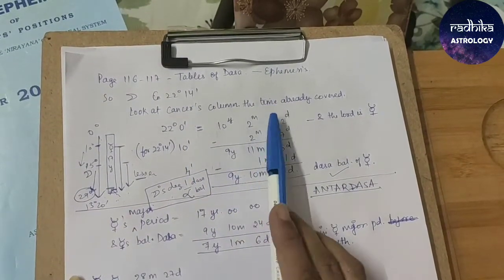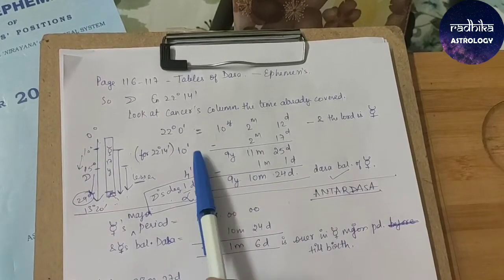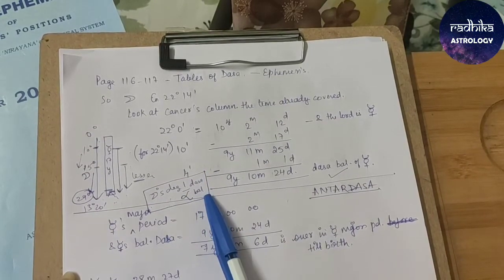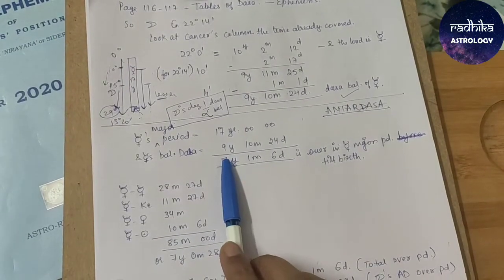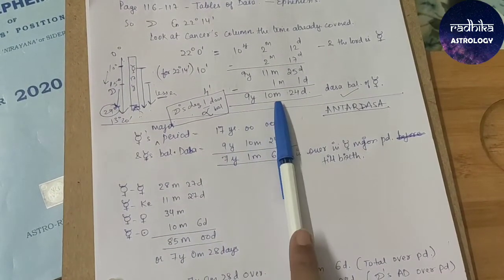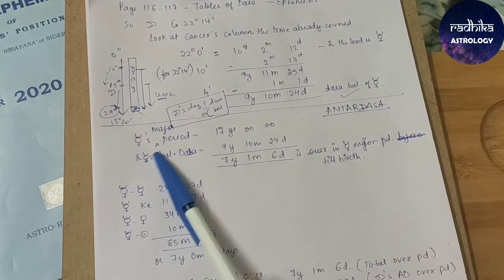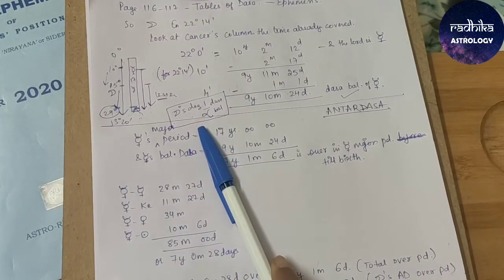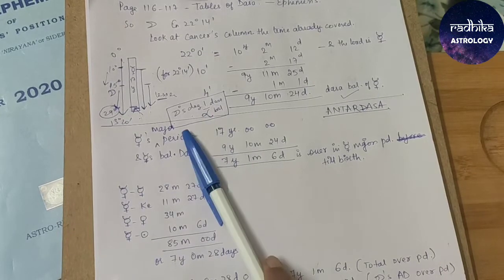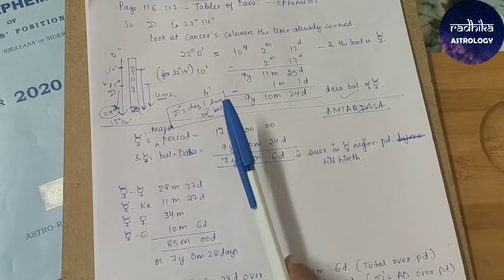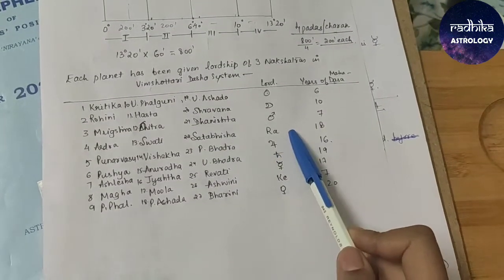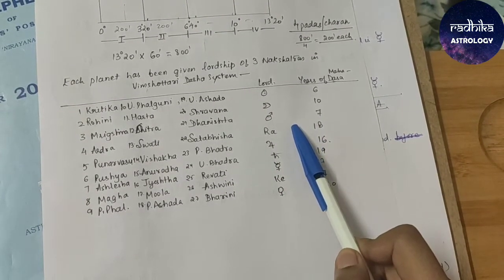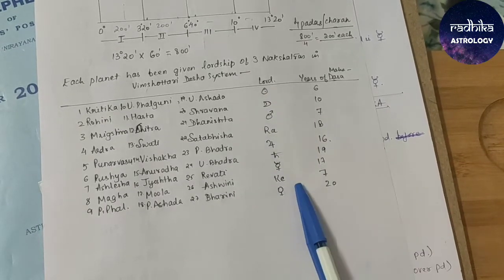From here also, using the tables in the ephemeris, we got this value. Subtracting the proportionate parts, always remember to subtract, never to add, because of this rule, the rule of inversely proportional. Then coming to the Antardasha, Mahadasha balance was 9 years, 10 months and 24 days for the native. It is like a cumulative dasha.